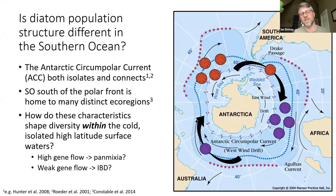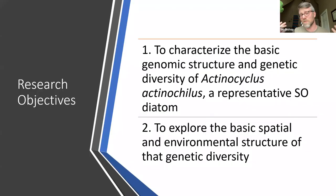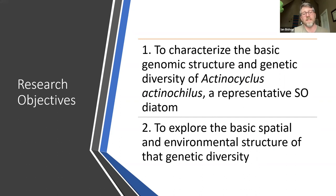How do these characteristics shape diversity within the high-latitude isolated cold waters of the Southern Ocean? Is the ACC promoting really high gene flow and panmixia, where populations look relatively the same regardless of where they're found? Or is it weak enough that we start to see patterns of isolation by distance? That's unclear because no one has taken a look yet. For this talk, I will be addressing two major research objectives: first, to characterize the basic genomic structure and genetic diversity of Actinocyclis actinochilus, a representative Southern Ocean diatom; and second, to explore the basic spatial and environmental structure of that genetic diversity.